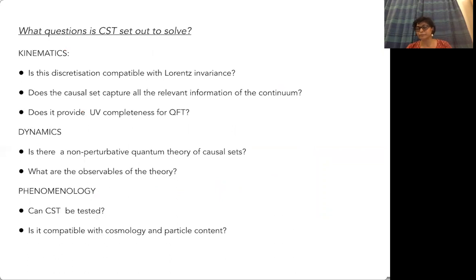What are the questions this bare-bones approach to quantum gravity is set out to solve? There are three ways to divide the theory: kinematics, dynamics, and phenomenology. In kinematics: Is this discretization compatible with Lorentz invariance? Does the causal set capture all relevant information? Does it provide UV completeness for QFT? In dynamics: Is there a non-perturbative quantum theory? What are the observables? In phenomenology: Can it be tested? Is it compatible with cosmology?